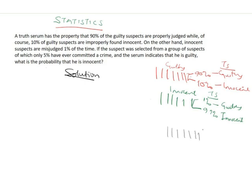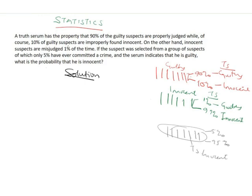Among the suspects, 5% are guilty and have committed a crime, while the remaining 95% are innocent. If one person among these people is picked by the truth serum, we need to find the probability that the randomly selected person is innocent. This is a problem under conditional probability — specifically Bayes' theorem. If you don't know Bayes' theorem, please review that formula before continuing.